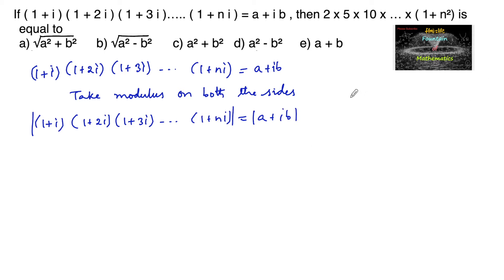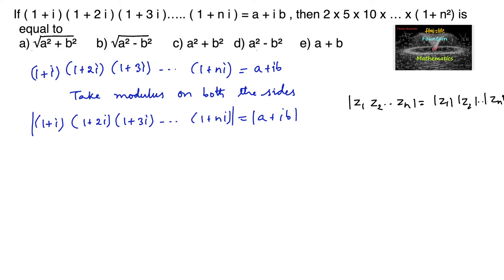And since we know that mod of z1·z2·...·zn, we can write it as |z1|·|z2|·...·|zn|. So we can apply the modulus for each and every complex number inside.